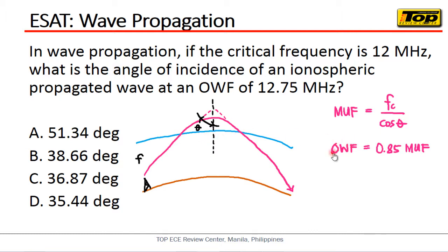We know the relationship between OWF and MUF: the OWF is equal to 0.85 of the MUF. Why 0.85? That is actually 85% of the MUF. Because we know the critical frequency is high, and at high frequency, there is a possibility that the signal will pass through the ionosphere and will no longer return to Earth. And we also know that the ionosphere changes its density at each time of the day — when the sun is high, the density is high, but when the sun sets, the density decreases. Therefore, the possibility of the signal escaping increases if we use the critical frequency. So we only use 85% of it, which is why it is called the optimum working frequency.